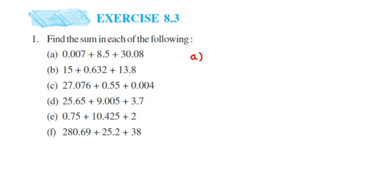The first number is 0.007. The second number is 8.5, so I'm going to line it up — the decimal point is here, 8 will come here, and 5 will come here. The other spaces which are blank you can just put 0 or leave blank. The next number is 30.08, so line up with the decimal.